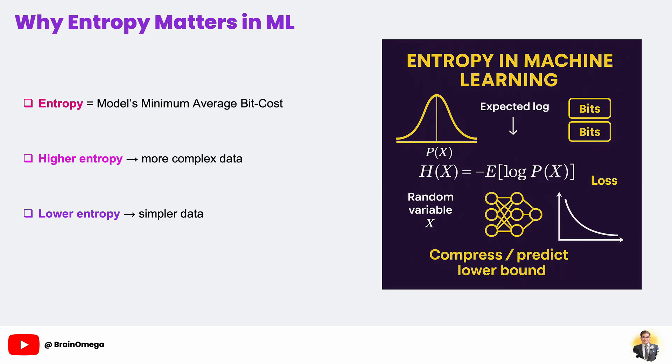At its core, entropy quantifies how much uncertainty or randomness lives inside your data. In machine learning, we can think of entropy as the minimum average number of bits needed to encode or describe each sample without loss. That means if your dataset has high entropy — lots of variability and rare events — no matter how clever your model is, it still needs a richer representation to capture all those nuances. Conversely, low-entropy data is inherently simpler, like a constant signal or one very predictable class, so you can compress or predict it with very few bits.